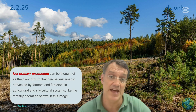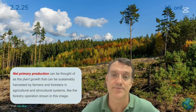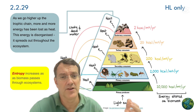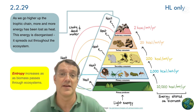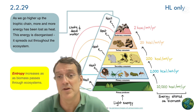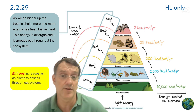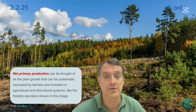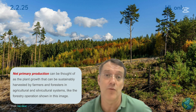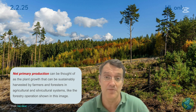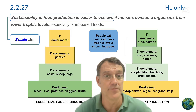Living systems can maintain their organization only by increasing entropy elsewhere in the system, and that has implications for how we think about ecosystem management and resource conservation. These ideas help us understand both the scientific principles governing the movement of energy and biomass in ecosystems, as well as the ethical considerations we must weigh when making decisions about resource use and food production.